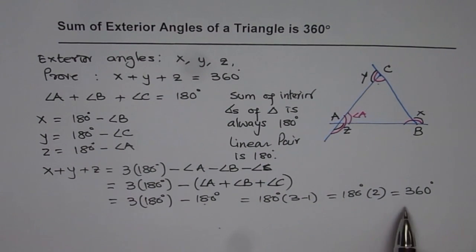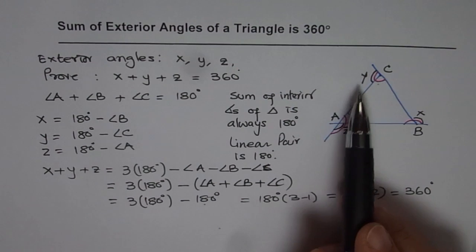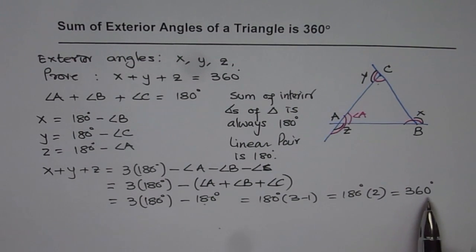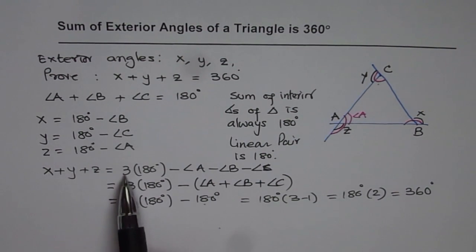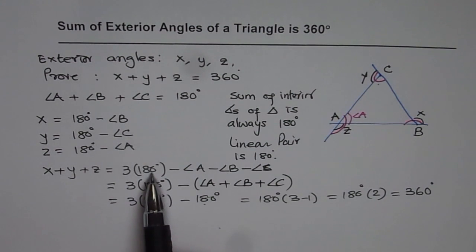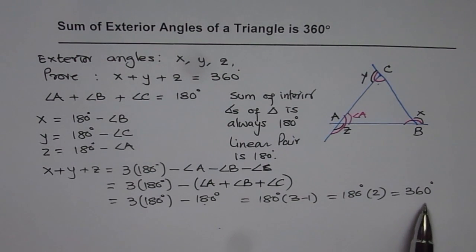Right? So that is how we can show that sum of exterior angles is always 360 degrees. Well, you could have multiplied this by 3 here and then taken away 180 to get 360. That is an alternate way.